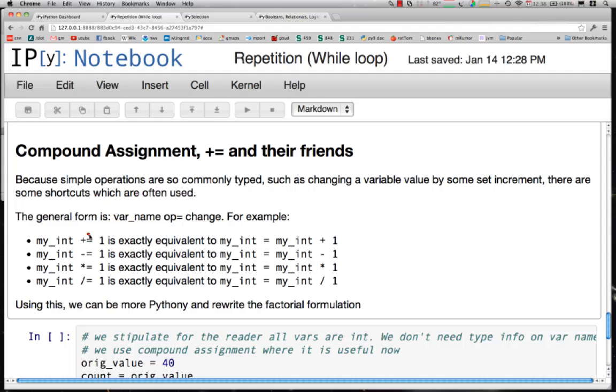You can shorten any operation by putting the operation you want to do to the variable and the value you want to put it on. So when I say myint plus equals 1, I want to make myint go up by 1. I want to make myint go down by 1. I want to make myint times 1. I want to make myint divided by 1. It is a simple shortcut.